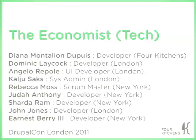We have predominantly a development team here, but the UX team is also present. Feel free to ask questions about anything you're interested in when we're done, even if it wasn't a topic we touched on. I'm Diana Montalien-Dupuis, a developer at Four Kitchens, and I worked on the Economist project as part of the Four Kitchens team, also known as the Janus team or the Austin team.